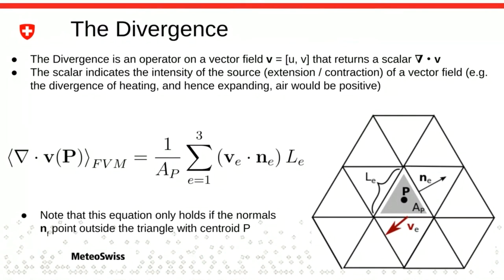For the divergence, we again want a value on our cell using the three edges around it. We need a vector field on the edges, the norm of the edge, the length of the edge, and the area of the cell. We compute the dot product between these two vectors, multiply by the length, sum up, then divide by the area. You will have all of these slides on the website when you do the exercises.